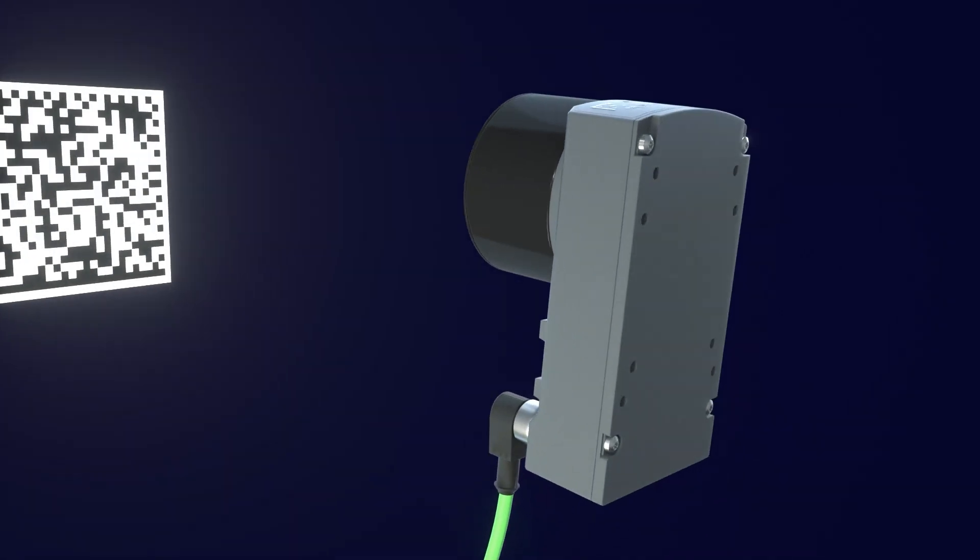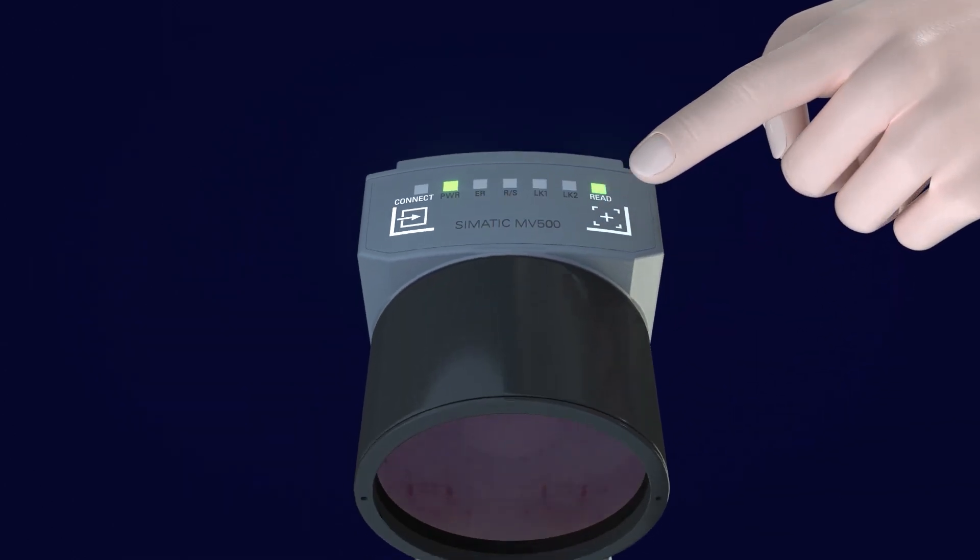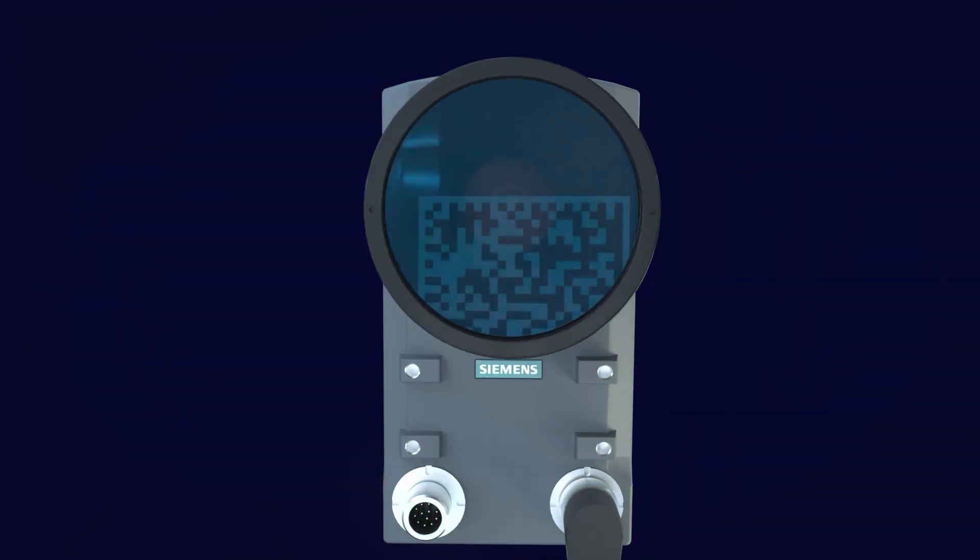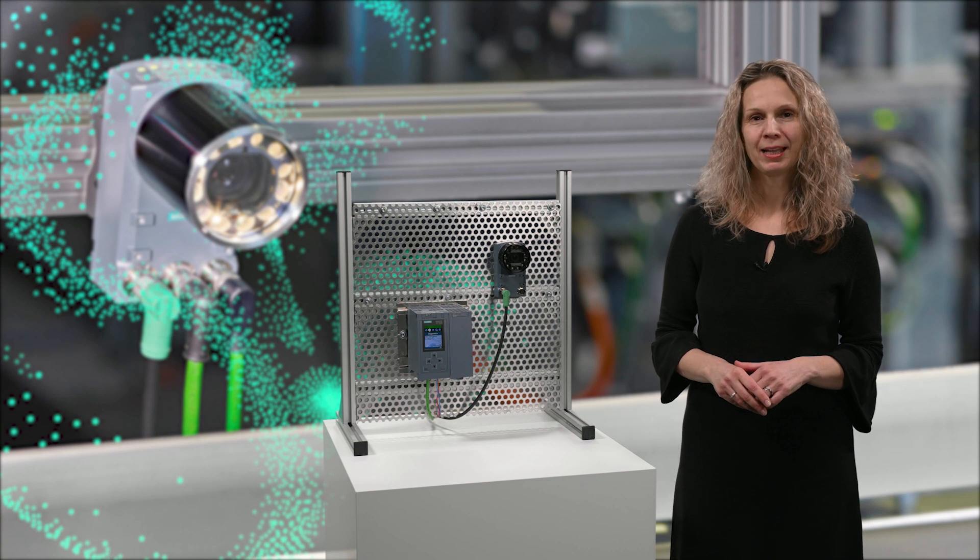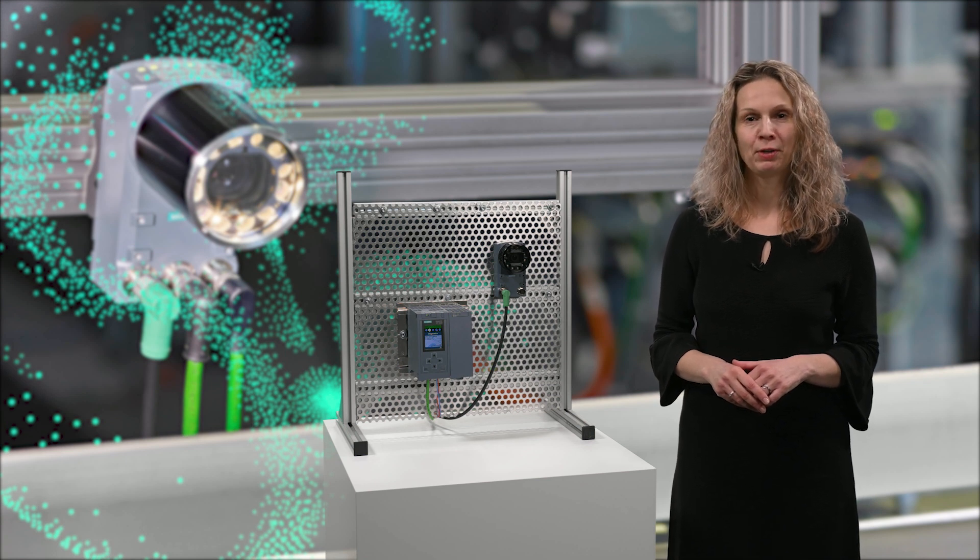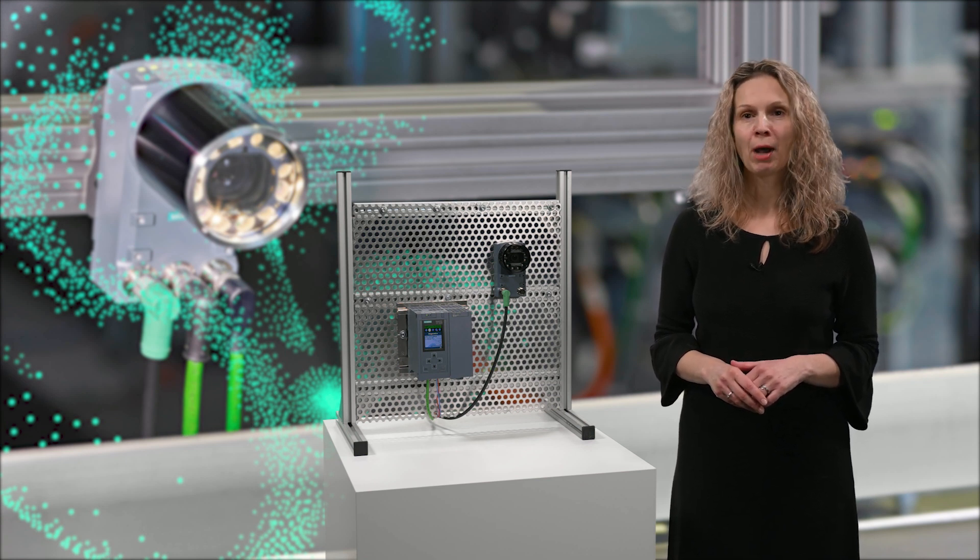For example, an optimized lens and ring light for enhanced depth of field. Only a few quick steps and the MV530 camera will read the code. I will show you how to do it.